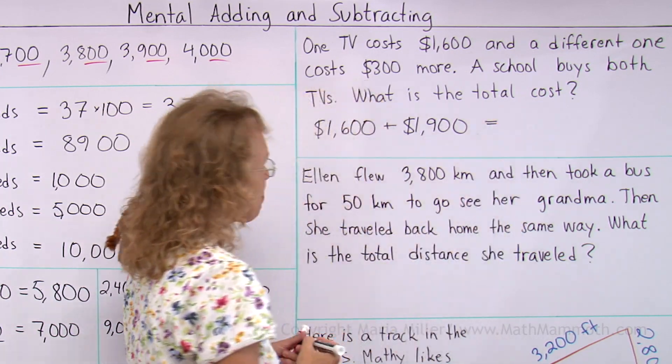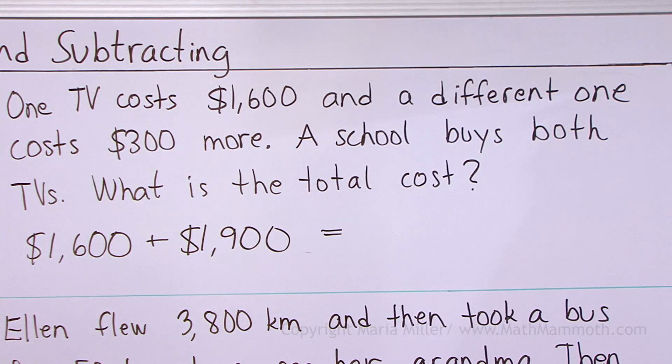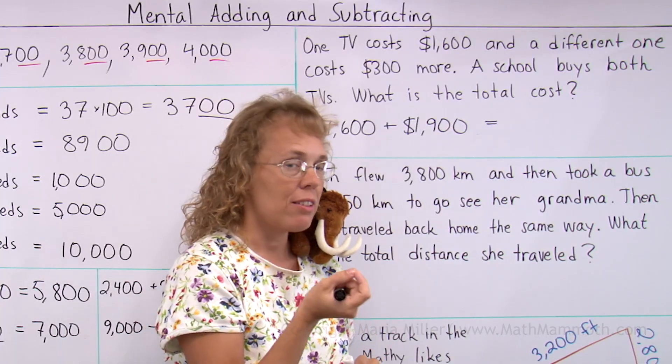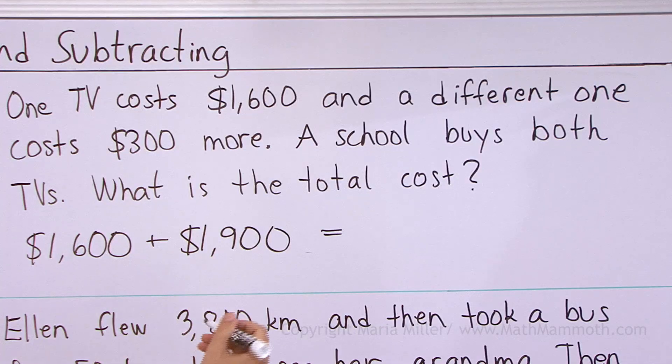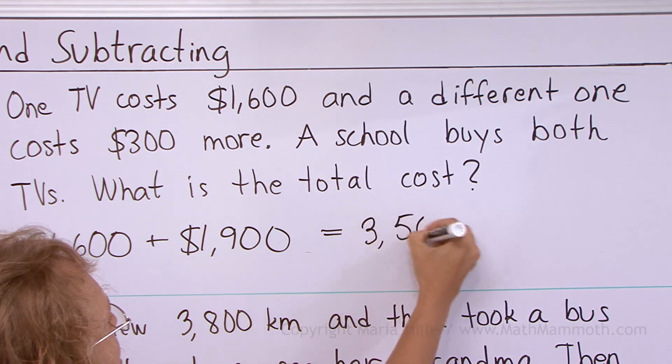This is the cost of the second TV, right? And now we add these. Can we do that mentally? Okay, you could think of 1,000 and 1,000, 2,000. 600 and 900 would be 1,500, right? So we would get $3,500.